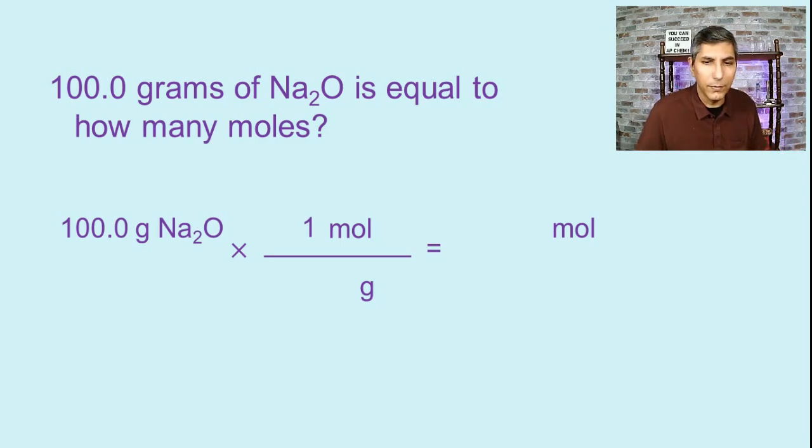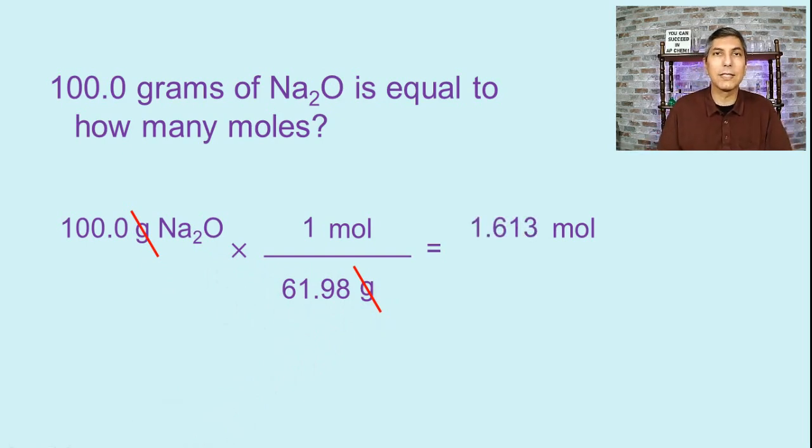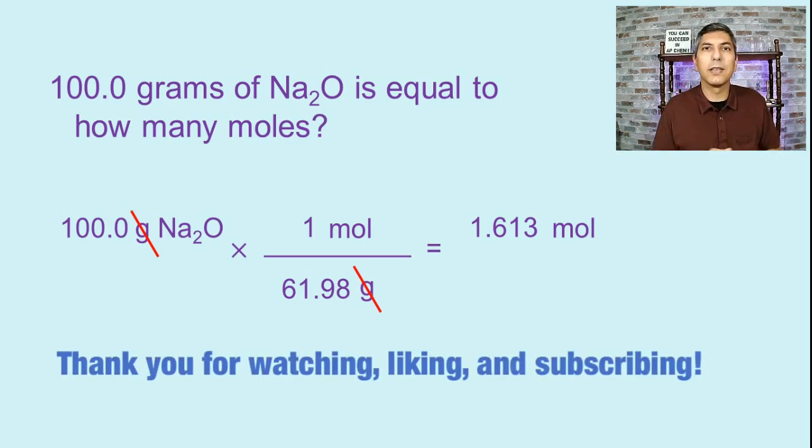We have to consult the periodic table. Sodium is about 22.99, but we have two of those, two atoms of that in this substance. And oxygen is about 16.00. So when we add all those together, we get a total mass of one mole of 61.98 grams. By the way, that value is called the molar mass. And that makes sense because that's the mass of a mole of something. So we say that the molar mass of this substance is 61.98 grams per mole. Now we can take the grams and cancel that top and bottom. On our calculator, we're going to take 100.0 divided by 61.98. And when you do that, you find that the answer is about 1.613 moles of this substance, sodium oxide. You can convert from grams to moles for any substance as long as you have its formula or if you have its molar mass.